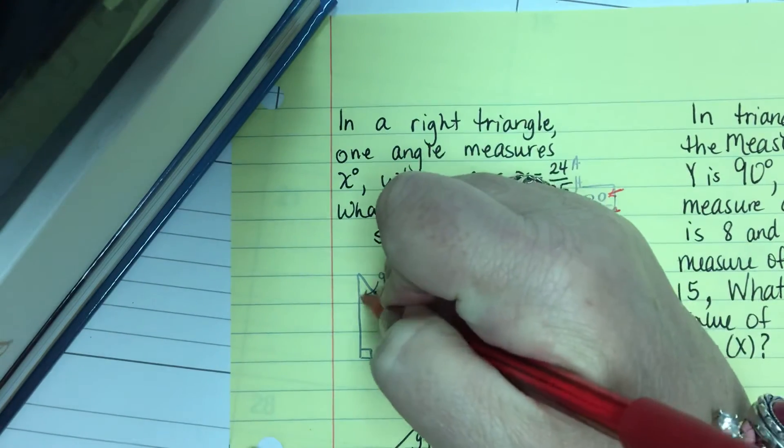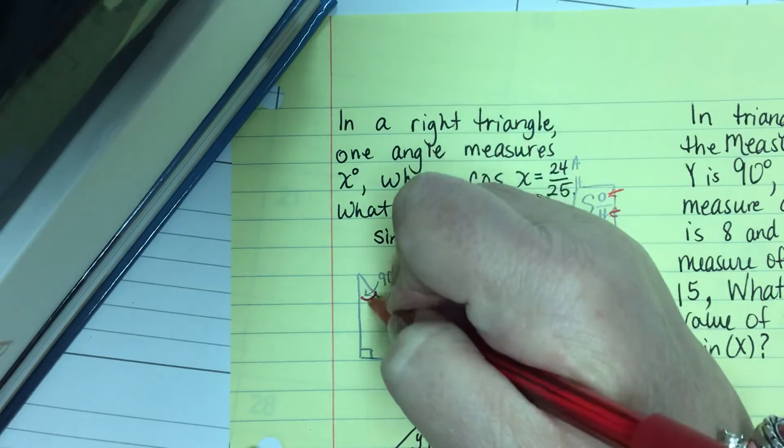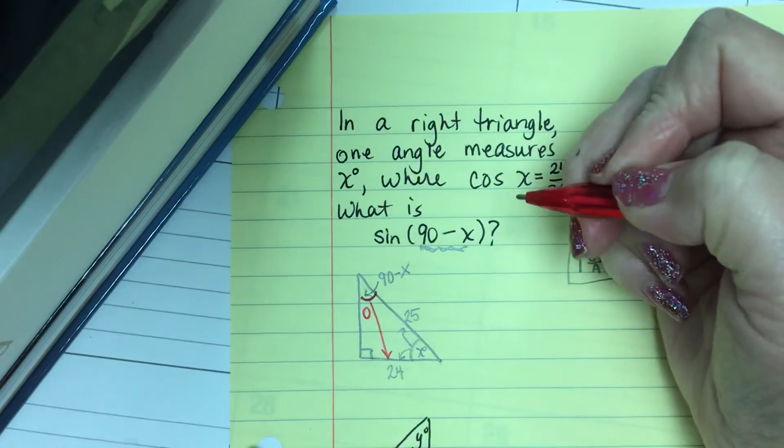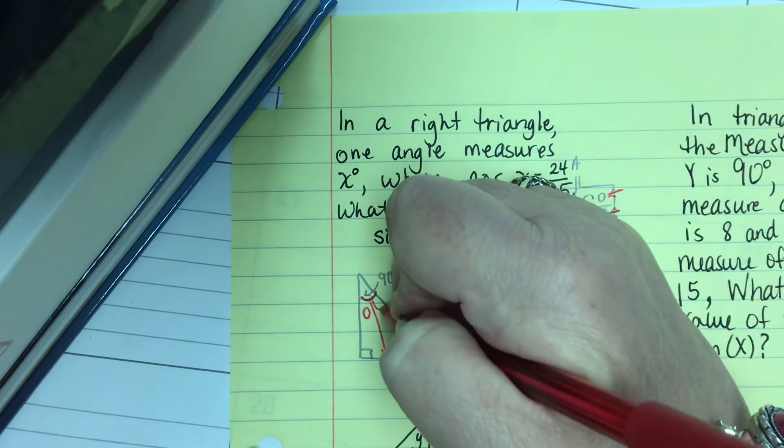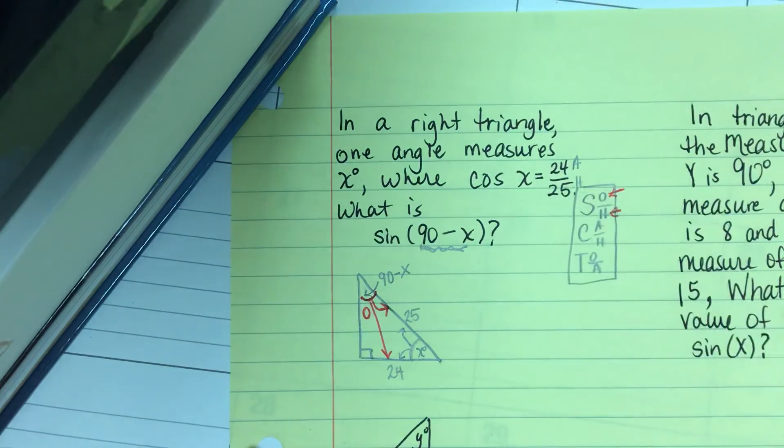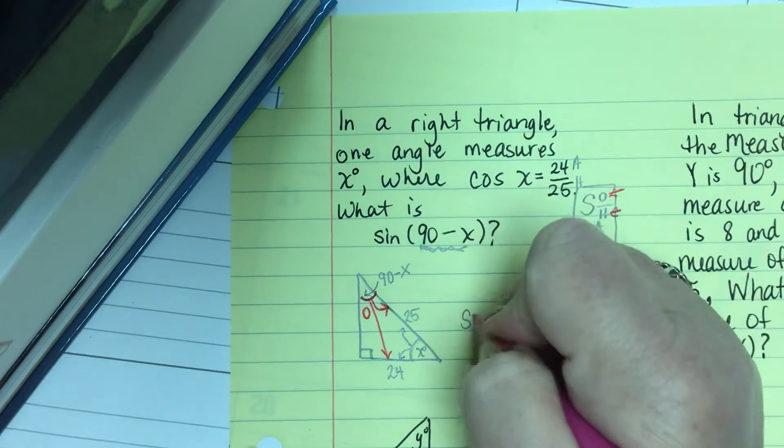So from this angle here, I have the opposite side. 24 is opposite. And I have the hypotenuse, which is 25. So I do have the sine of 90 minus x.